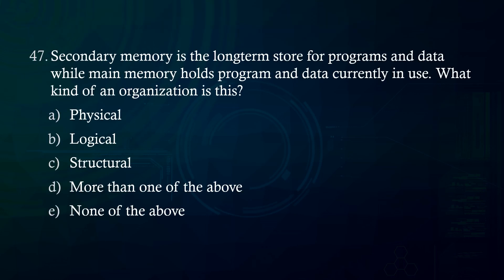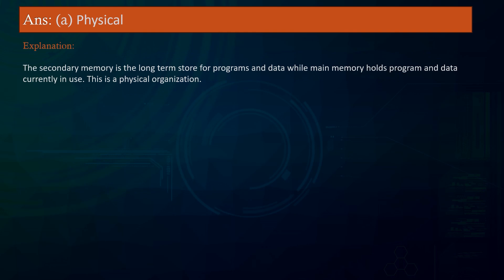Secondary memory is a long-term store for programs and data, while main memory holds programs and data currently in use. What kind of an organization is this? A. Physical B. Logical C. Structural D. More than one of the above E. None of the above. Answer: Physical. Explanation: The description of secondary memory as a long-term store and main memory holding data currently in use describes a physical organization.